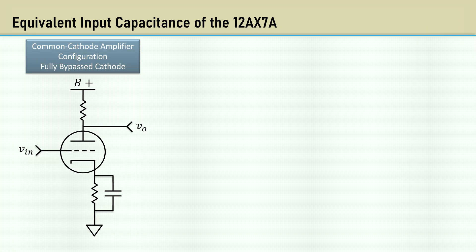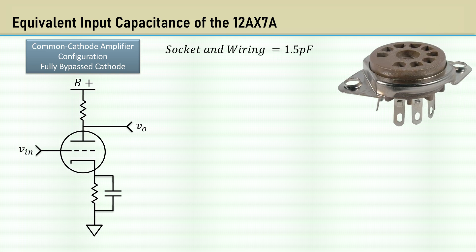Let's calculate the equivalent input capacitance of the 12AX7A. This is a schematic of the common cathode amplifier configuration for the fully bypassed cathode. The inter-electrode capacitances are not the only capacitances. There are parasitic capacitances from the tube socket and wiring at approximately 1.5 picofarads. So we will add 1.5 picofarads to the grid-to-plate capacitance and the grid-to-cathode capacitance.